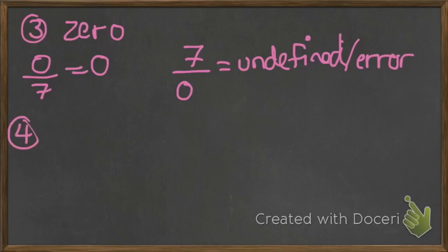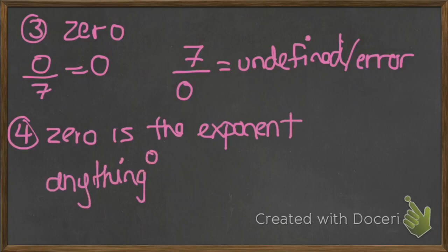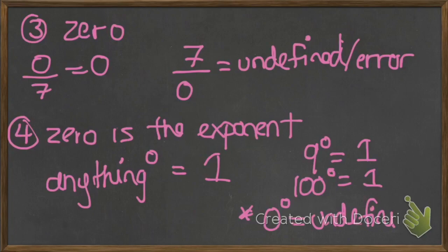One of the other things about 0 is when 0 is the exponent: anything to the power of 0 is equal to 1. We will learn this when we do exponent laws in later classes. So 9 to the power of 0 is 1, and 100 to the power of 0 is 1. The only exception is 0 to the power of 0, which is undefined — we can't do 0 to the power of 0.